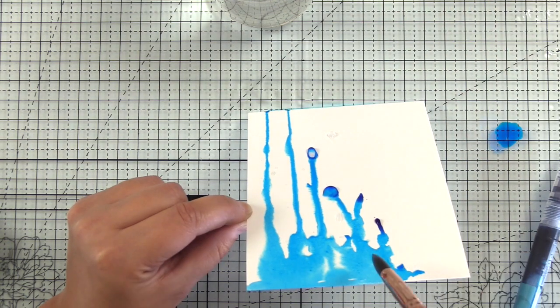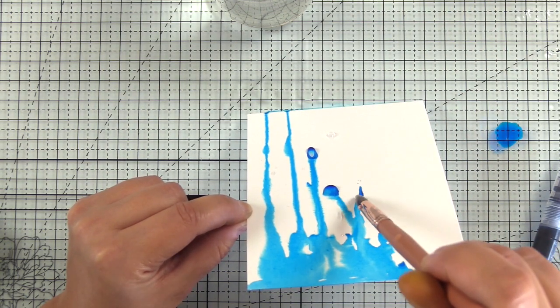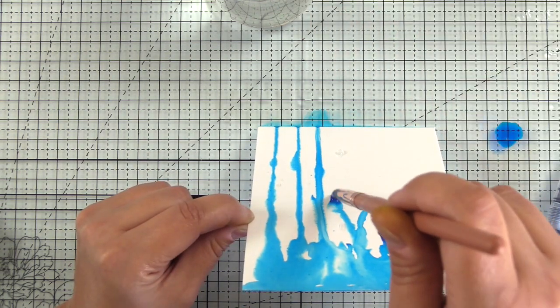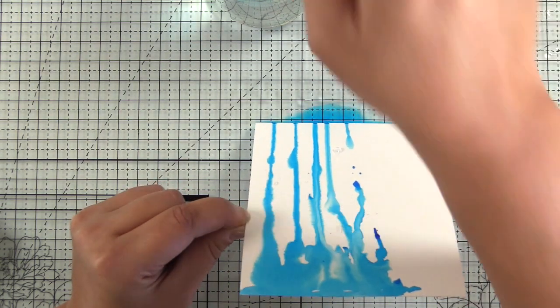So here I'll alternate between adding a little more water and a little more pigment until I'm happy with the waterfall that I have going on here.